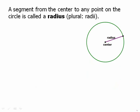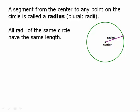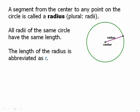A segment from the center to any point on the circle is called a radius, and the plural of that word is radii. All radii of the same circle have the same length by definition. The length of the radius is abbreviated as R.